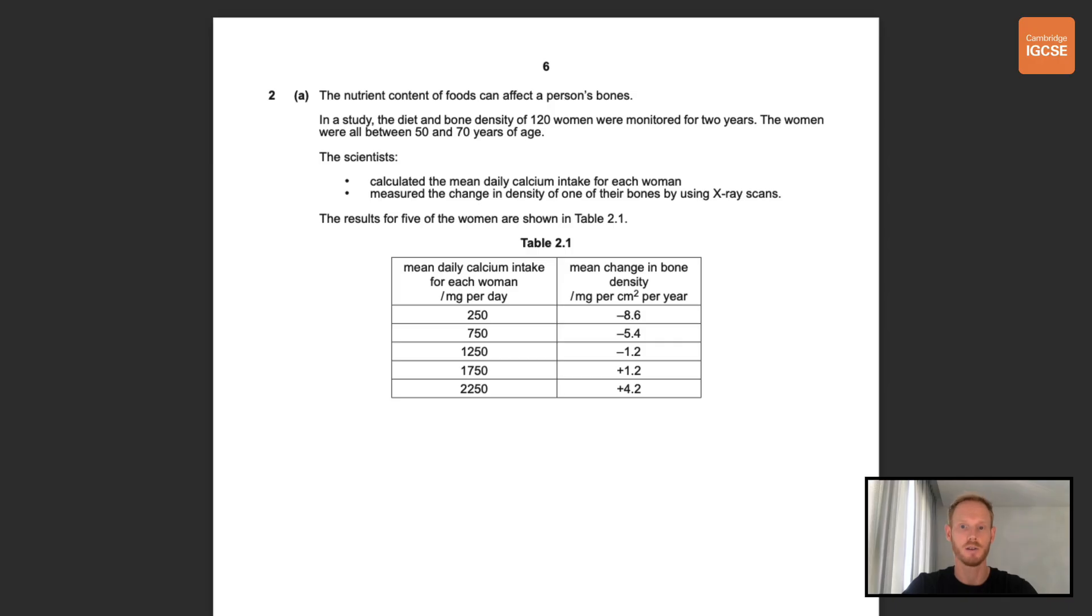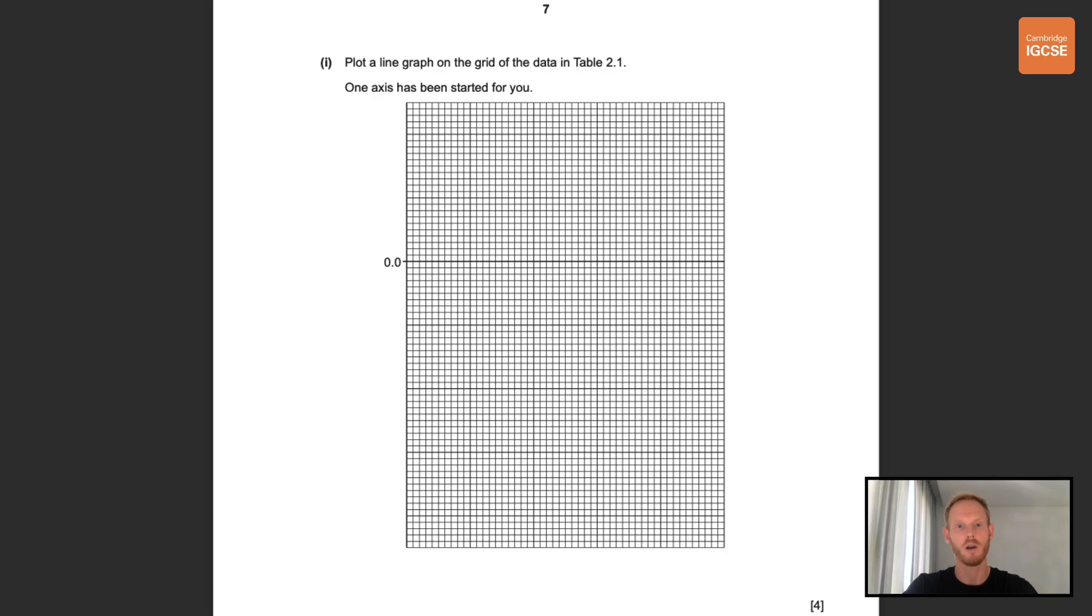The nutrient content of foods can affect a person's bones. We learned about this in topic 7.1 on diet. In a study the diet and bone density of 120 women were monitored for two years. The women were all between 50 and 70 years of age. The scientists calculated the mean daily calcium intake for each woman and measured the change in density of one of their bones by using x-ray scans. The results for the five women are shown in table 2.1. You need to plot a line graph on the grid of the data in table 2.1 and one axis has been started for you.